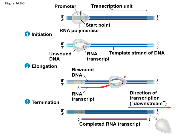Then we get to termination. There's a sequence downstream of the promoter and the gene — at the end of the gene — that causes the RNA polymerase to fall off. In prokaryotes it falls off directly, and in eukaryotes it falls off soon thereafter. You end up with what we call an RNA transcript. In prokaryotes we call it the transcript; in eukaryotes we call it the pre-mRNA. The gene has then been transcribed.